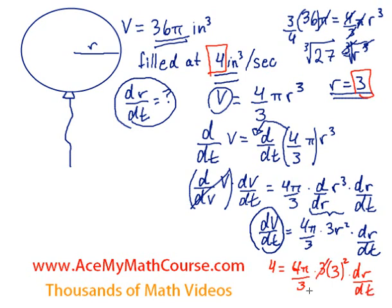Now over here the 3s cancel out, and I'm just going to keep working over here because I ran out of room. So 4 equals 4π times 3² is 9, times dr/dt. Then I can divide both sides of the equation by 36π. Why 36? Well, because 4 times 9 is 36.